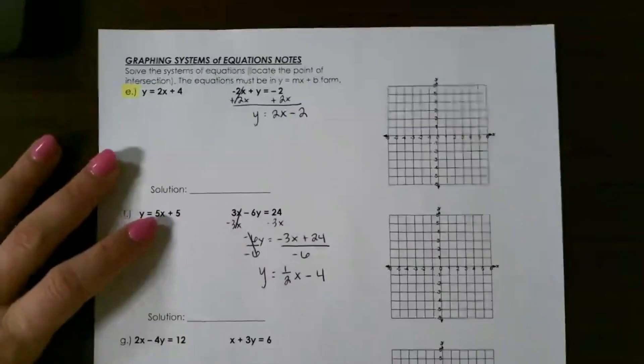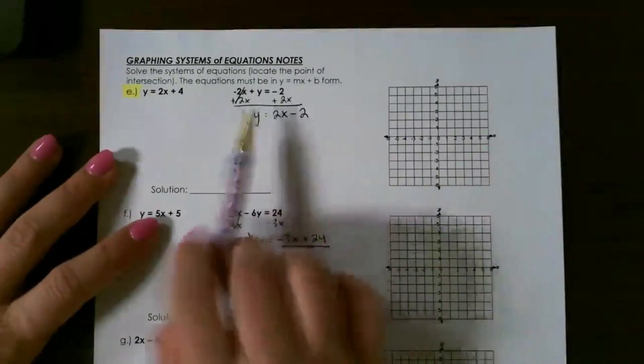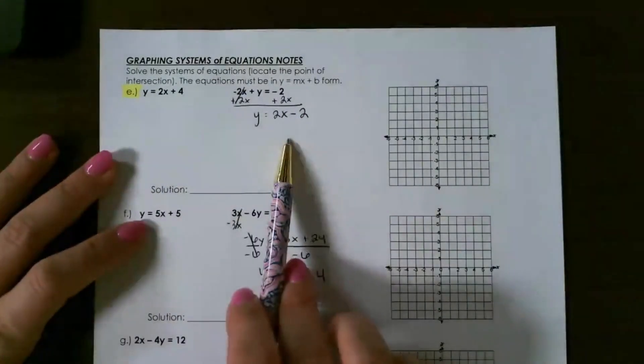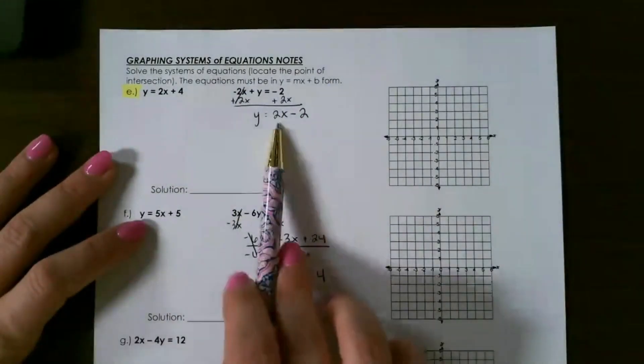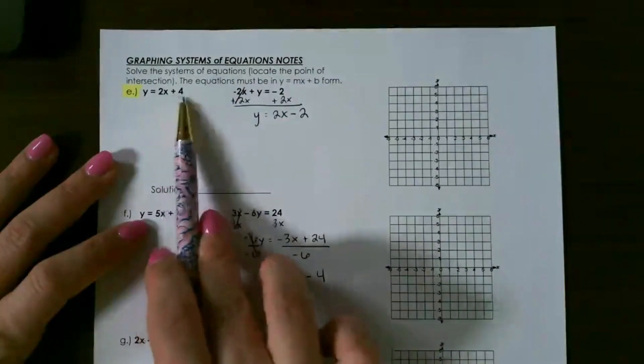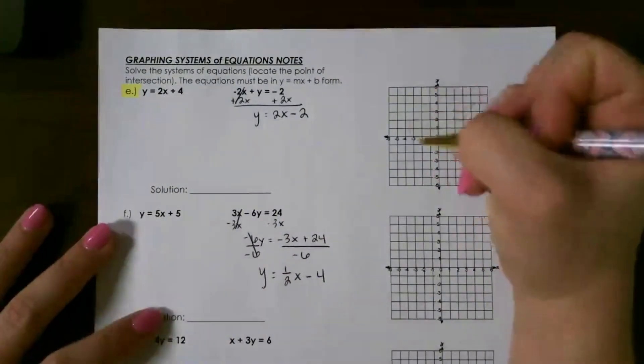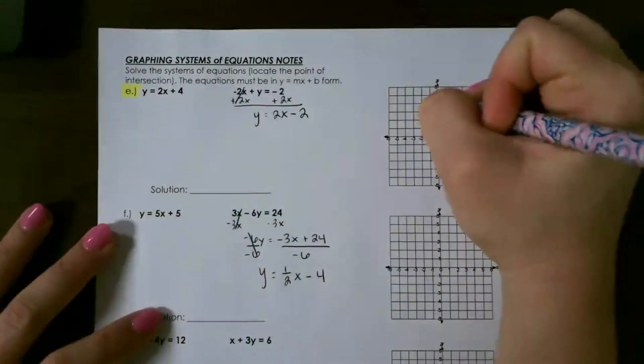For our next one, we can look at this line. Here's our first one already in slope intercept form, and I changed this one to slope intercept form. Notice that we have the same slope but different y-intercepts, so I can already tell that it's going to be no solution. But I'm going to put it on the graph just to double check.